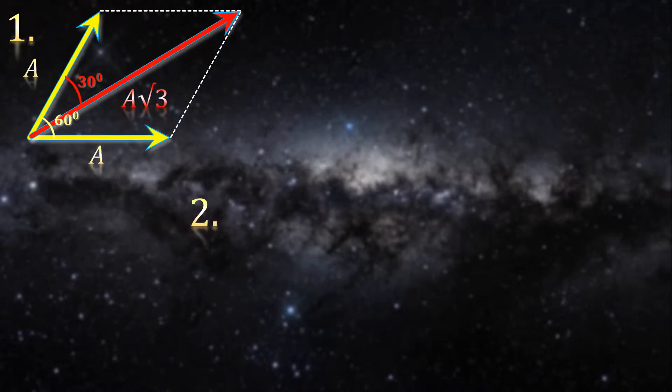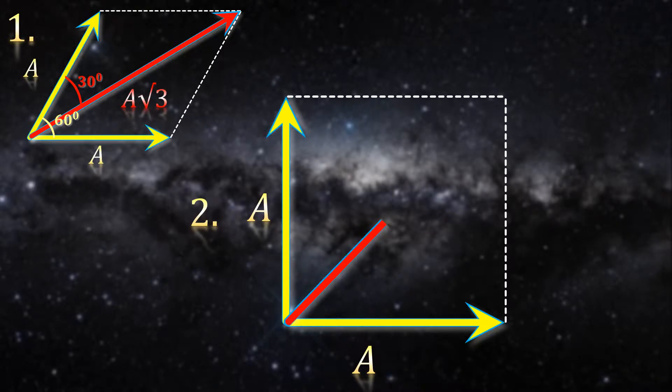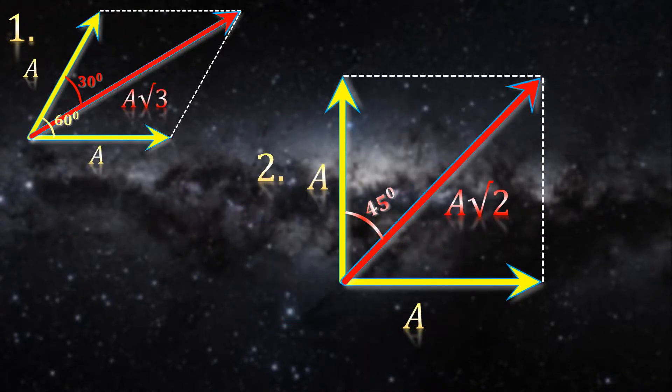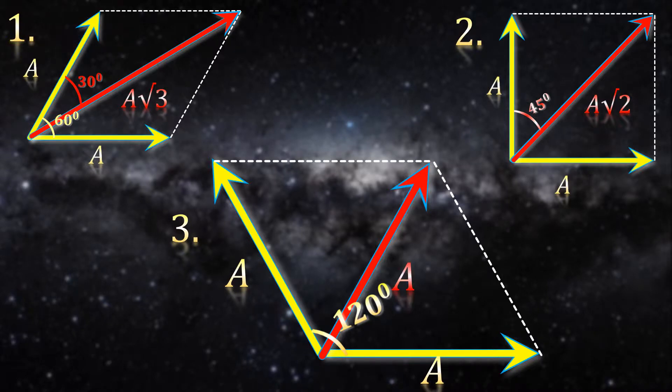Second one, if the vectors make angle of 90 degrees, then the resultant will have magnitude of a root 2. And lastly, if they make an angle of 120 degrees, then the resultant will have the same magnitude a.